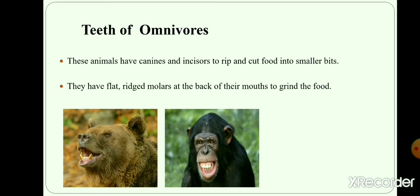Teeth of omnivores. Omnivores eat both plants and animals. Omnivores have different types of teeth for eating different kinds of food. These animals have canines and incisors to rip and cut food into smaller bits. They have flat molars at the back of their mouth to grind the food. We and chimpanzees have this type of teeth.